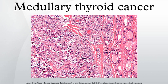In MTC, the flushing, diarrhea, and itching are all caused by elevated levels of calcitonin gene products. Alternatively, the flushing and diarrhea observed in carcinoid syndrome is caused by elevated levels of circulating serotonin. Medullary thyroid carcinoma may also produce a thyroid nodule and enlarged cervical lymph nodes.